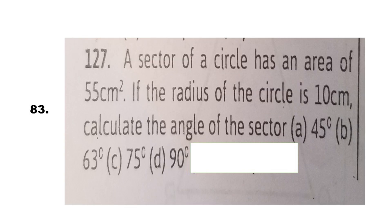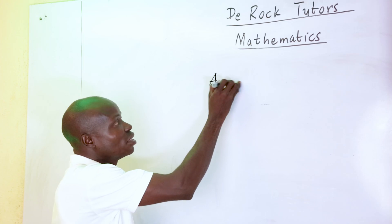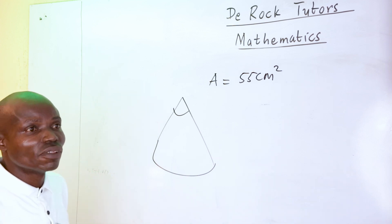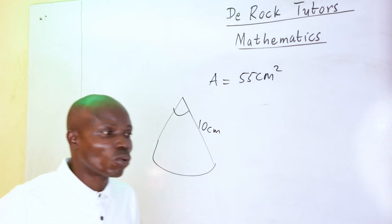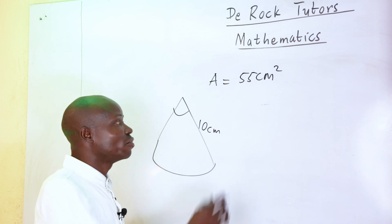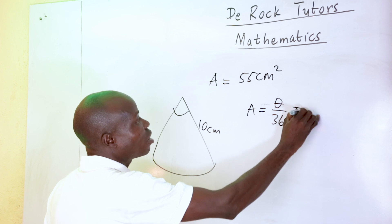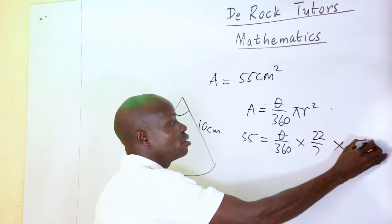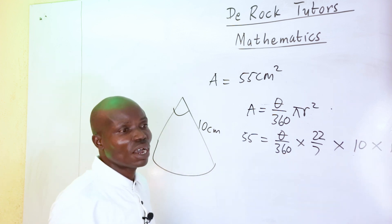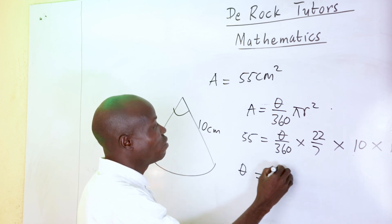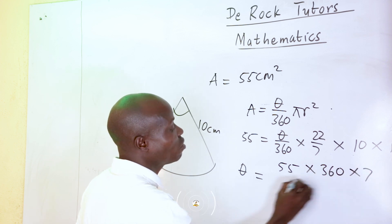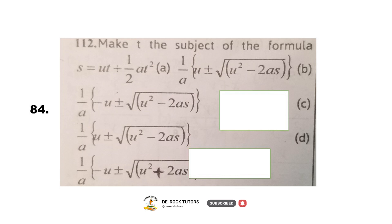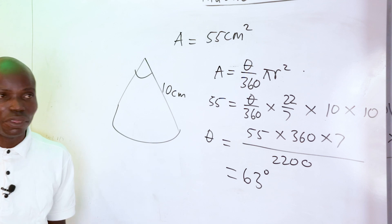Number 83: a sector has area 55 square centimeters and radius 10 cm. Using area equals (theta/360) times πr², we get 55 equals (theta/360) times (22/7) times 100. Solving for theta: theta equals (55 times 360 times 7) over 2200, giving theta equals 63 degrees. The correct option is B.